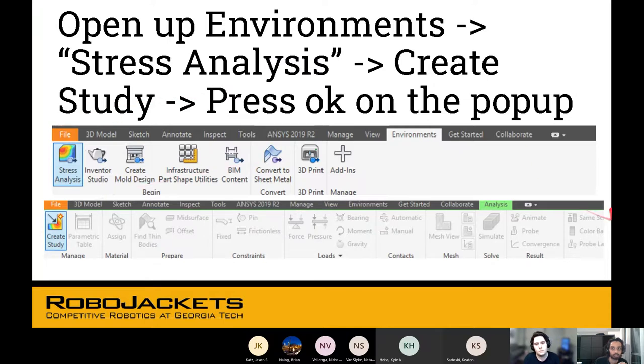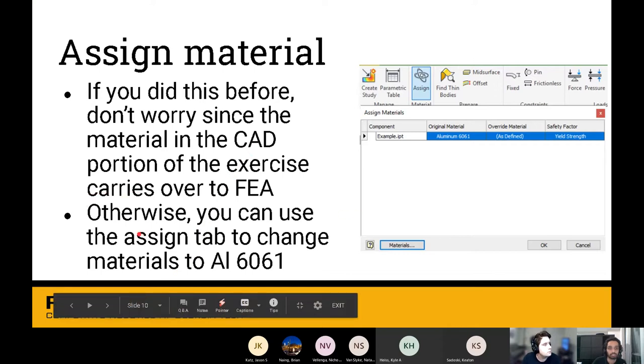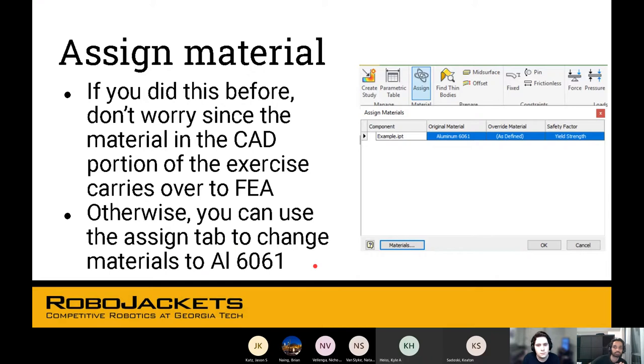Next thing, you open up Environments, you do Stress Analysis, and you create a study. Then you press OK on the pop-up. If you didn't assign your material before, you'll have another chance to assign your material here. Inventor should have materials preloaded into it, which means it just knows the material properties, such as Young's Modulus, et cetera.